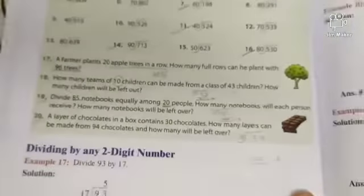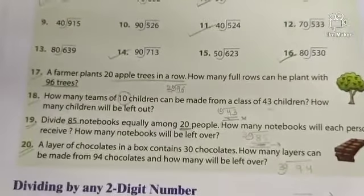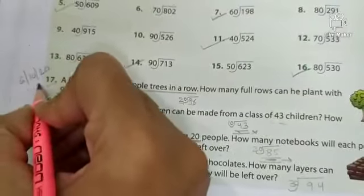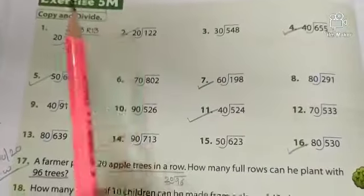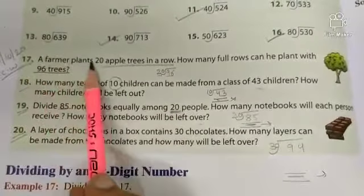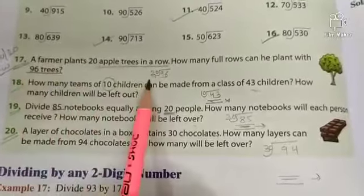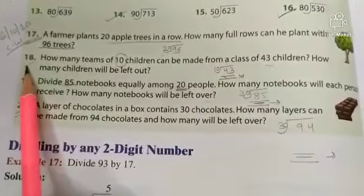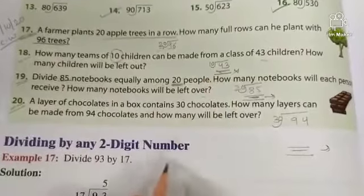Children, I have explained you these questions. Open your notebook. Put today's date — 6th of October 2020 — then write down 'Class Work', then write down the heading 'Exercise 5M'. After that, note down question number 17 in very beautiful handwriting — a farmer plants 20 apple trees in a row — and solve it. Then note down question number 18 and solve it. Children, try to write statements by yourself.